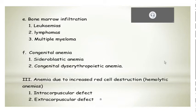Then anemia due to increased RBC destruction, which is obviously hemolytic anemia, and as you know it can be intracorpuscular or extravascular — between intravascular and extravascular. Extravascular mostly takes place in the spleen and the liver. Intravascular can be cell membrane defects or other enzyme deficiencies, which we'll talk about later.